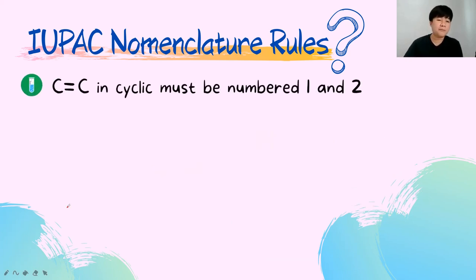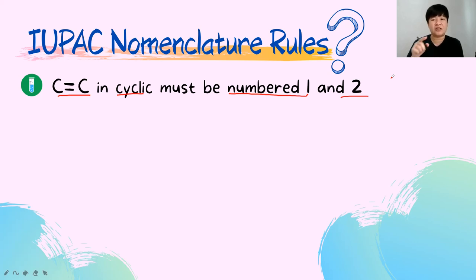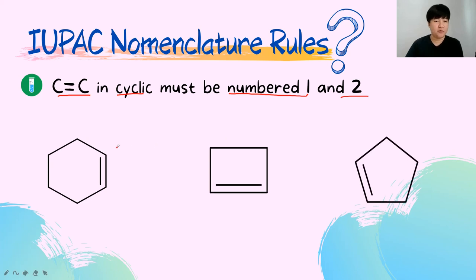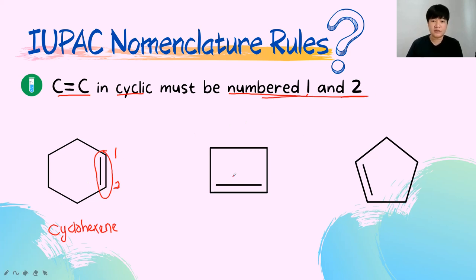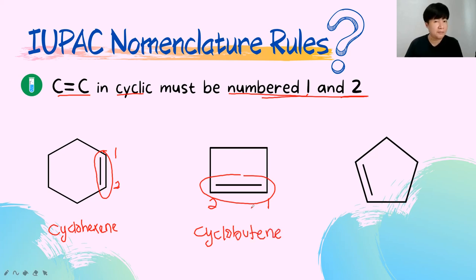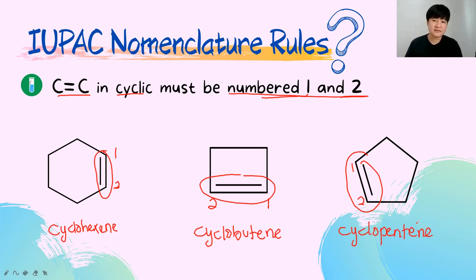For cyclic alkene naming, the carbon-carbon double bond in the cyclic structure must always be assigned positions 1 and 2. Therefore, cyclohexene does not need a number in front — the double bond is always at carbons 1 and 2. The same applies to any cyclic alkene: the double bond forever holds positions 1 and 2.